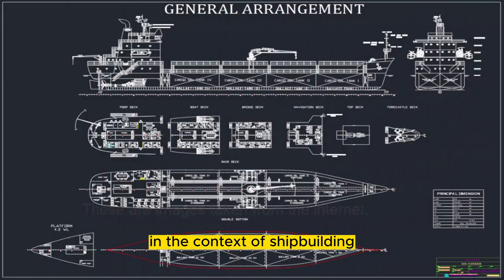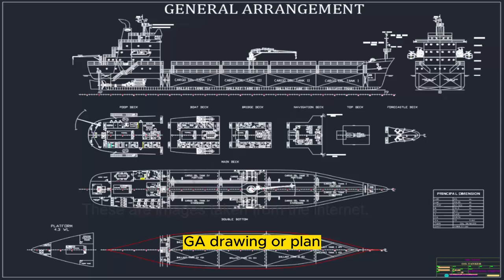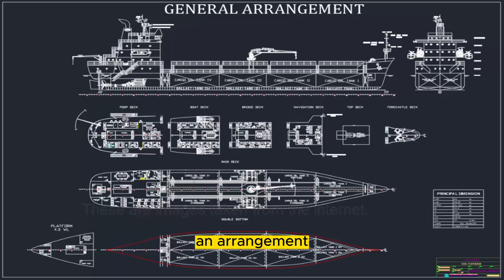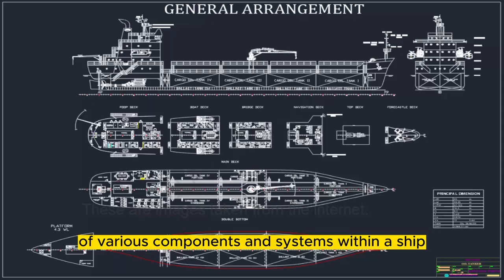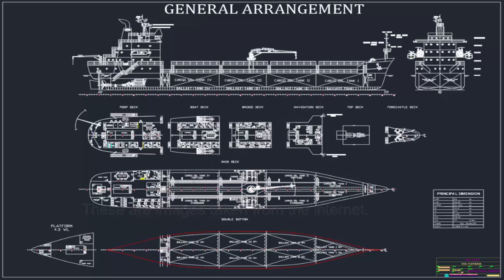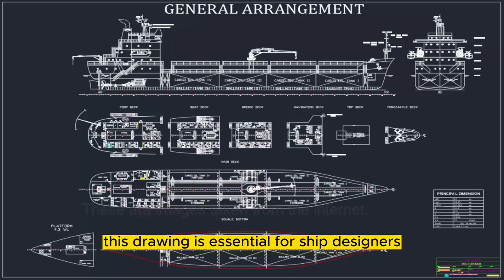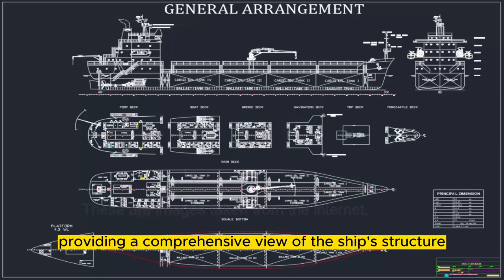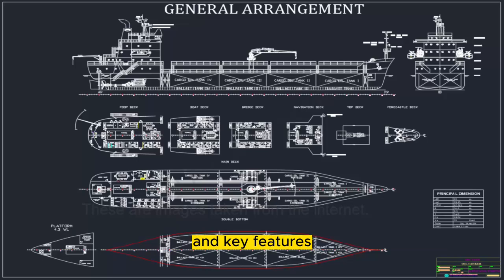In the context of shipbuilding, a general arrangement, GA, drawing or plan is a detailed depiction of the layout and arrangement of various components and systems within a ship. This drawing is essential for ship designers, builders, and operators, providing a comprehensive view of the ship's structure and key features.